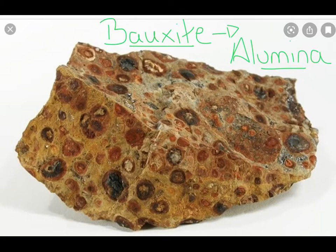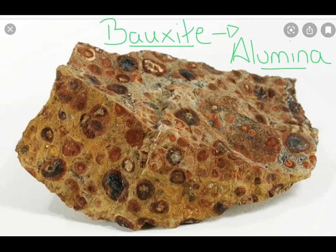This bauxite has to be converted to a substance called alumina before we can extract the aluminium from it. Alumina is a white powder, also called aluminium oxide. The bauxite is mined out of the earth and purified by mixing it with the alkali sodium hydroxide. The alumina dissolves but the other chemicals don't; it is then filtered, and acid is added to the filtrate, which is heated to form alumina — the aluminium oxide from which we get our aluminium.